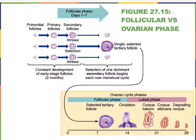If fertilization does not occur, the corpus luteum will eventually start to degenerate, becomes the corpus albicans, and becomes smaller and smaller.